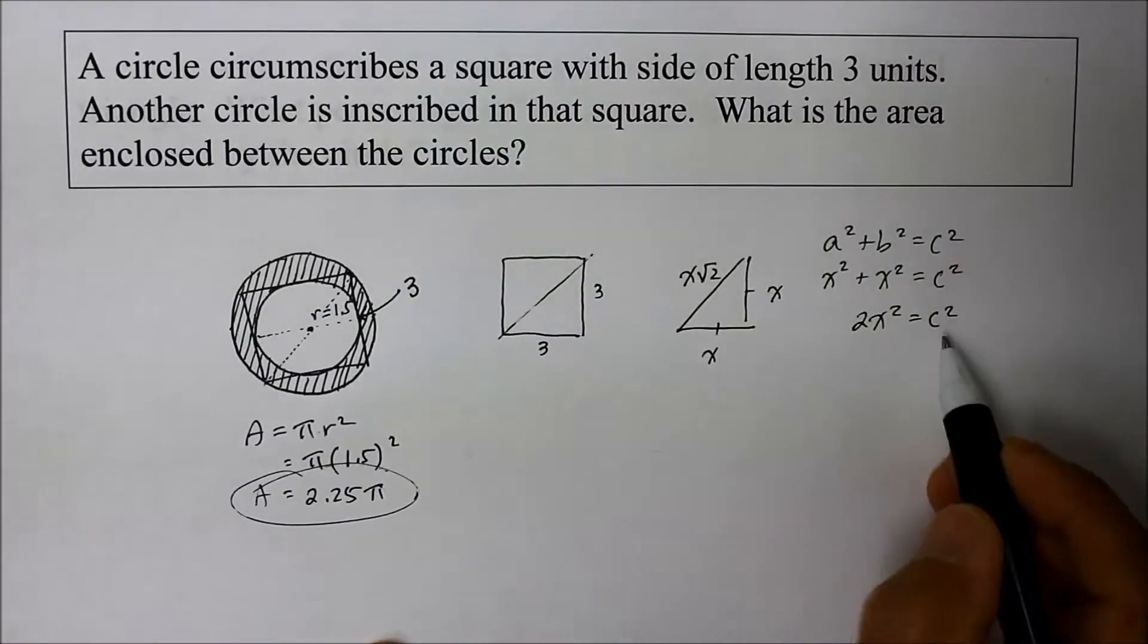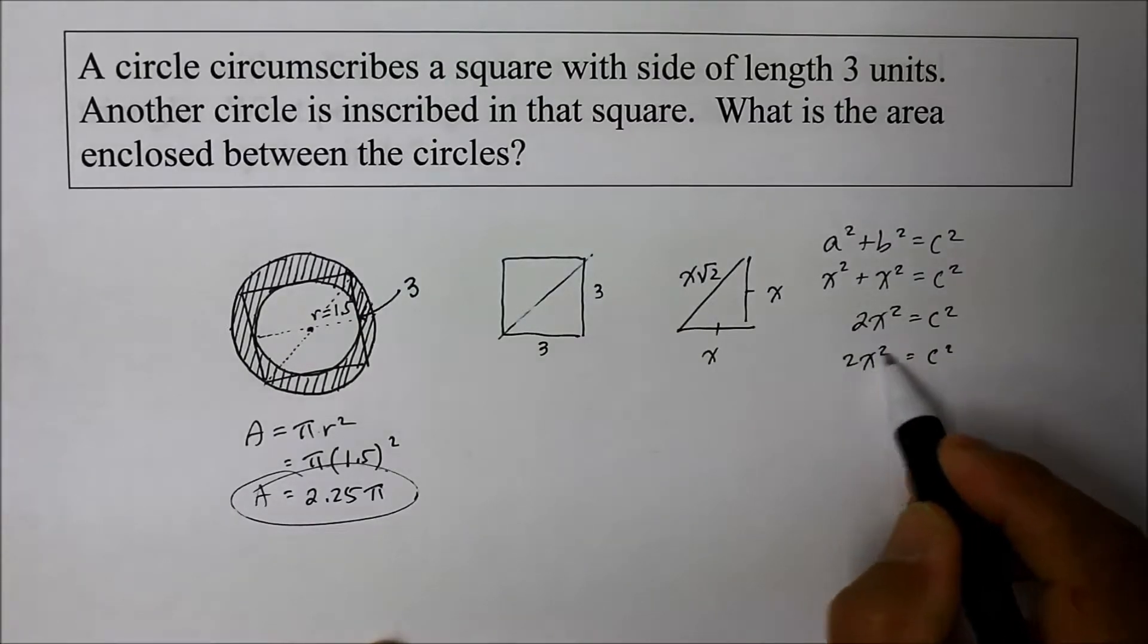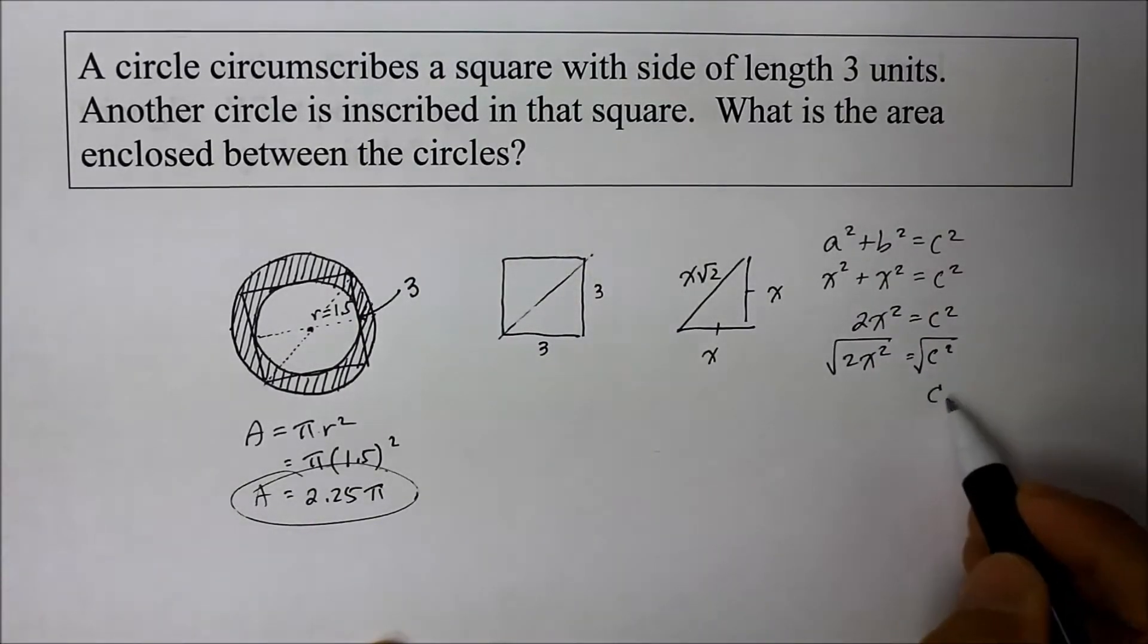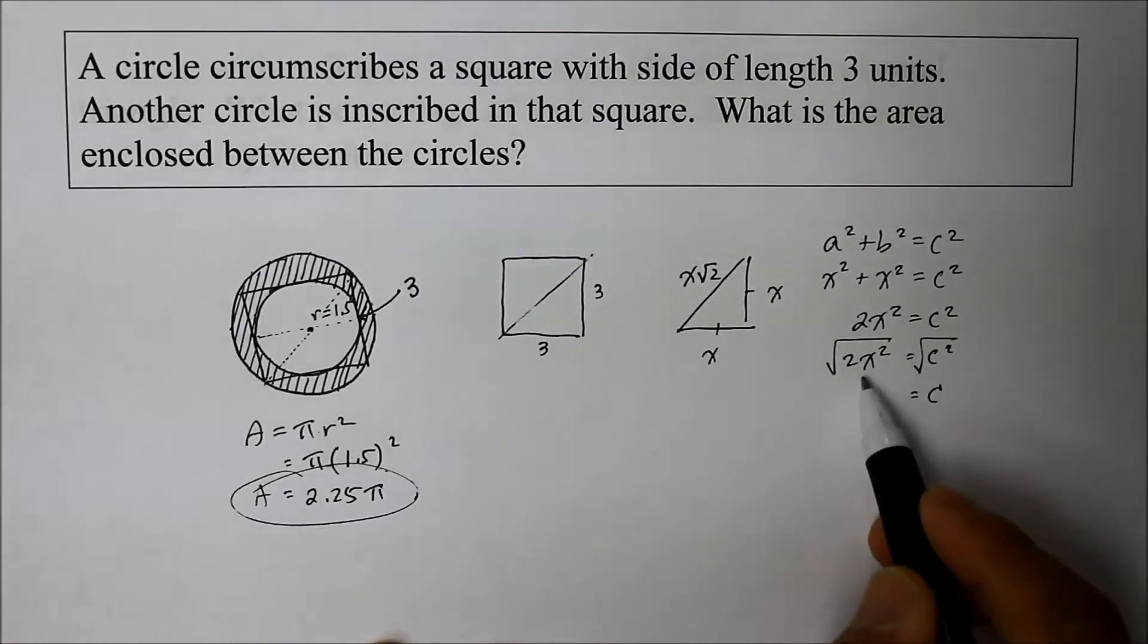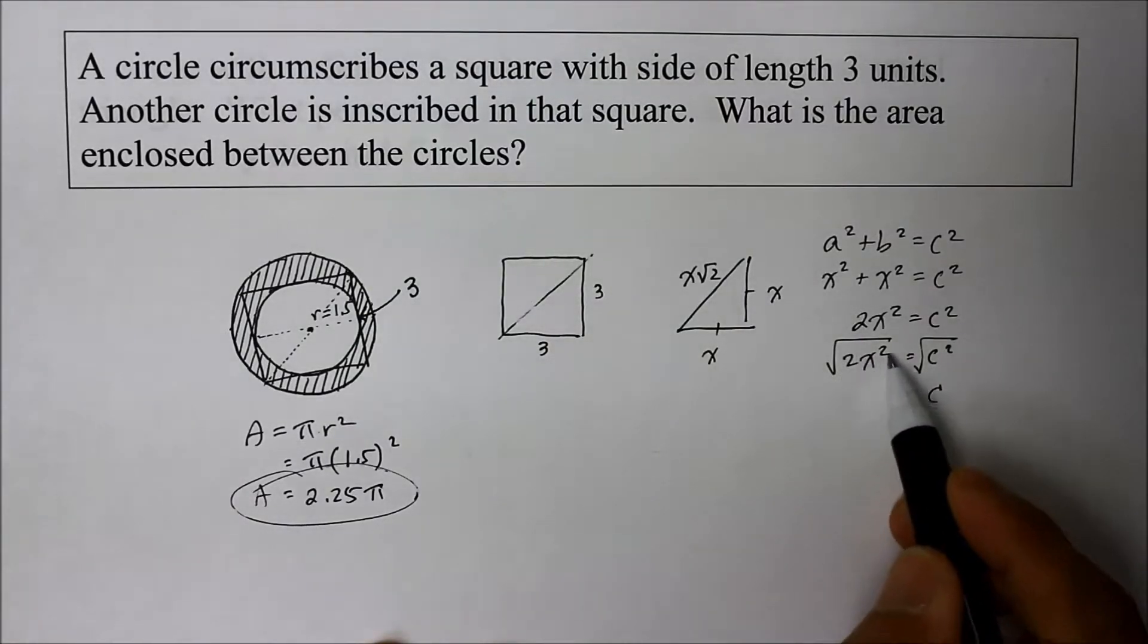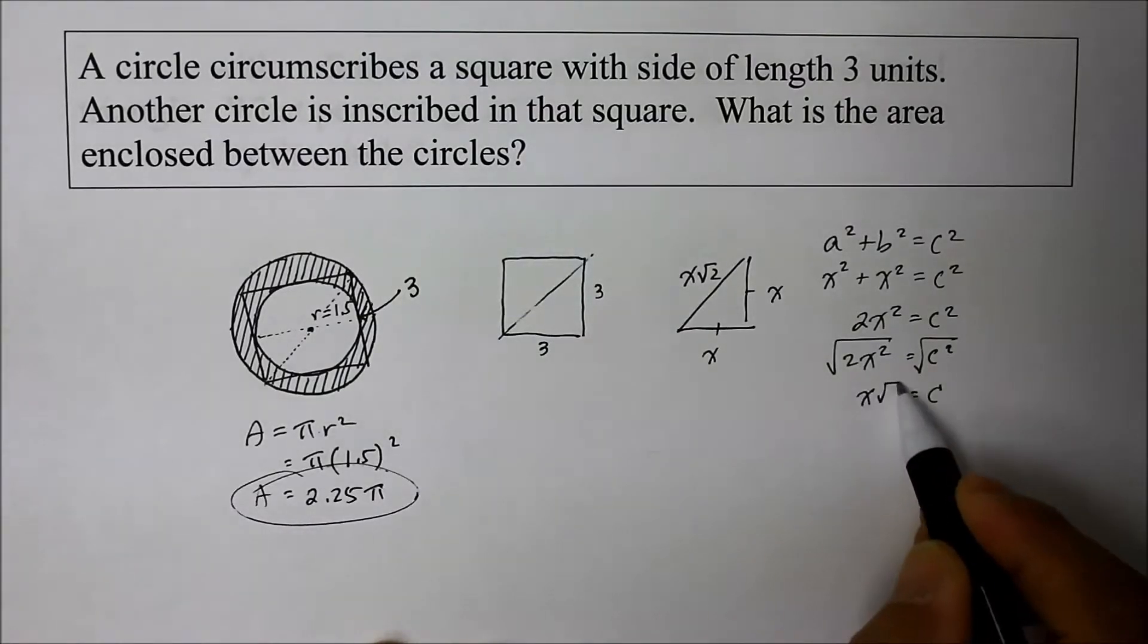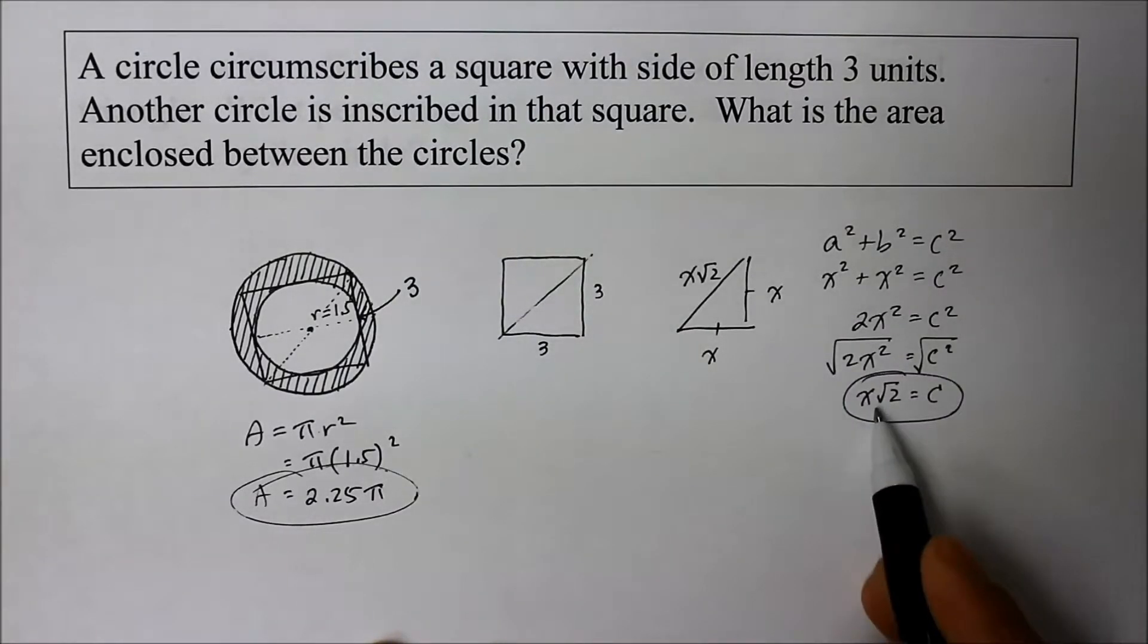To solve for c, you're going to square root both sides of this equation. So the c comes out. Inside the radical, there's x squared, so x comes out. What stays in is the 2. There it is.